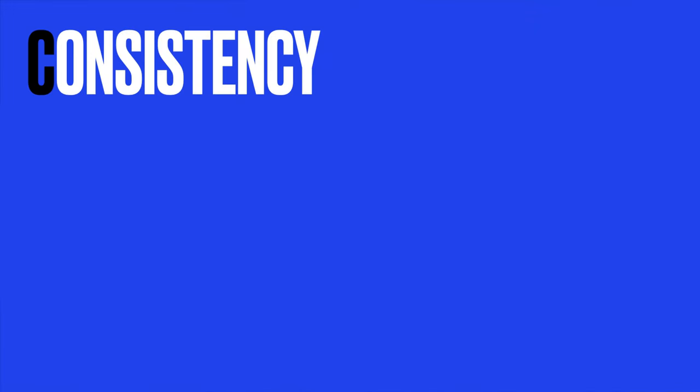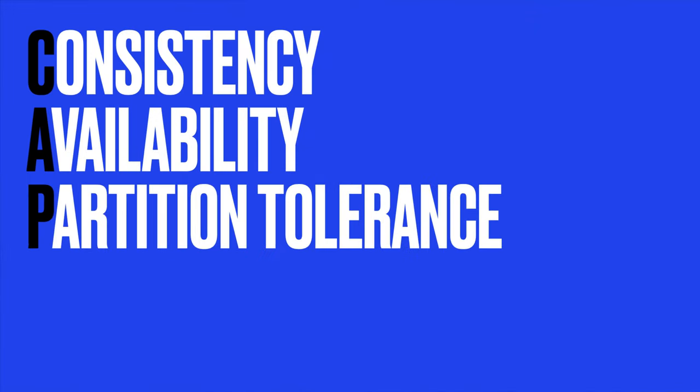The CAP theorem is a well-known principle in distributed systems. It states that a distributed data store can only provide at most two of the following three properties: consistency, availability, and partition tolerance. It can never simultaneously provide all three. As with most other things, the easiest way to understand this theorem is with an example.